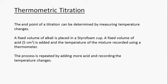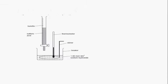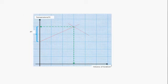A fixed volume of acid, say 5 cm³, is added and the temperature of the mixture is recorded using a thermometer. The process is repeated by adding more acid and recording the temperature changes. Essentially, you have a burette with your acid and a fixed volume of alkali, and you continue adding 5 cm³ volumes, stirring the reaction mixture and recording the temperature each time.